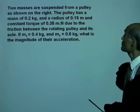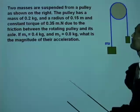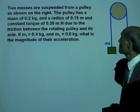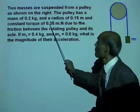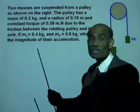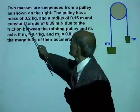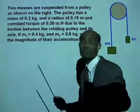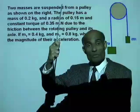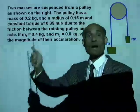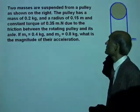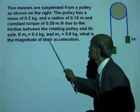Problem 4: Two masses are suspended from a pulley. The pulley has mass 0.2 kg, radius 0.15 m, and a constant frictional torque of 0.35 N·m between the rotating pulley and axle. With M₁ = 0.4 kg and M₂ = 0.8 kg, find the magnitude of their acceleration.